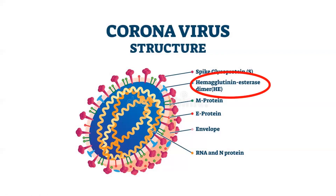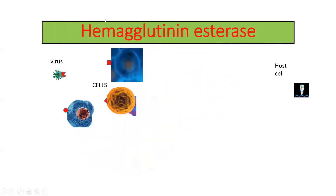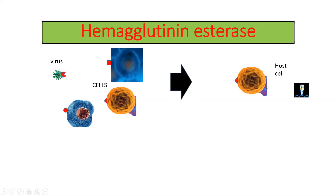Today I want to talk about the hemagglutinin esterase dimer — what it is for and how the virus uses these proteins. Hemagglutinin esterase. The virus has to bind to cells, and to do so it has to recognize some receptors in the cell. As you see, there are three different cells here, but unless the cell has the related receptor which mediates the virus's binding to the cell, the virus can't bind. Our target cell is this cell, and the virus binds to it because it recognizes the receptor on the cell.